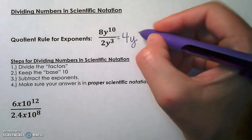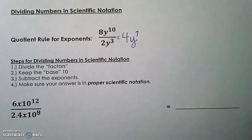Y is considered the base because both of those y's have exponents on them. When we keep the base, we then subtract the exponents, so 10 minus 3 would give us 7. So our quotient would be 4y to the 7th.